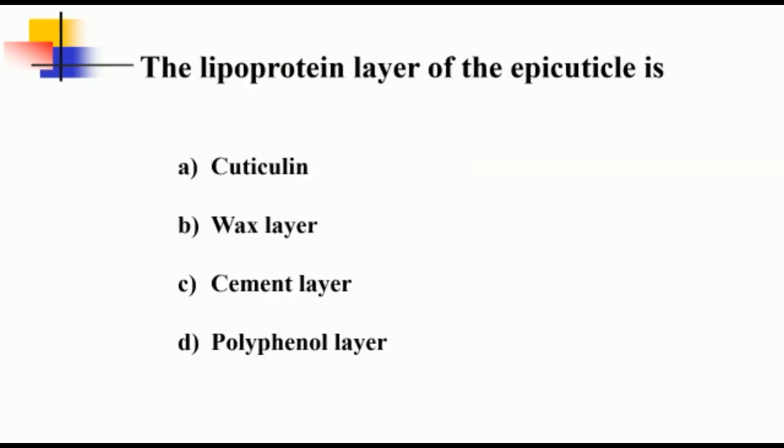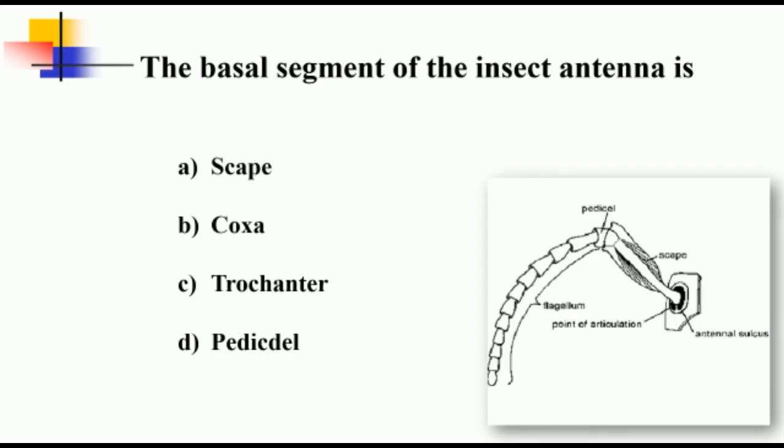The lipoprotein layer of the epicuticle is cuticulin layer. The basal segment of the insect antenna is scape. Insect antenna is mainly made up of three parts: scape, pedicel, and flagellum. Scape is attached to the antennal sulcus and it is the basal segment.